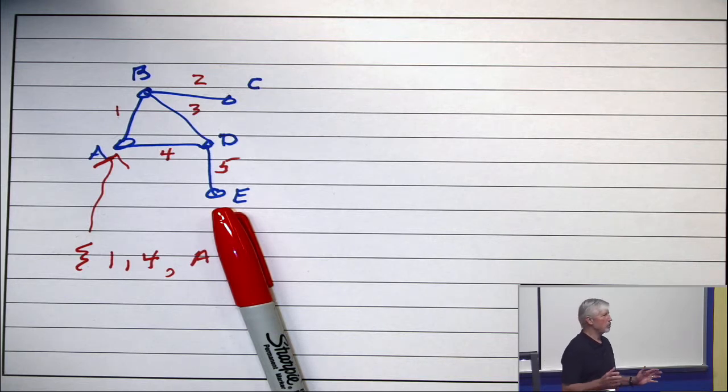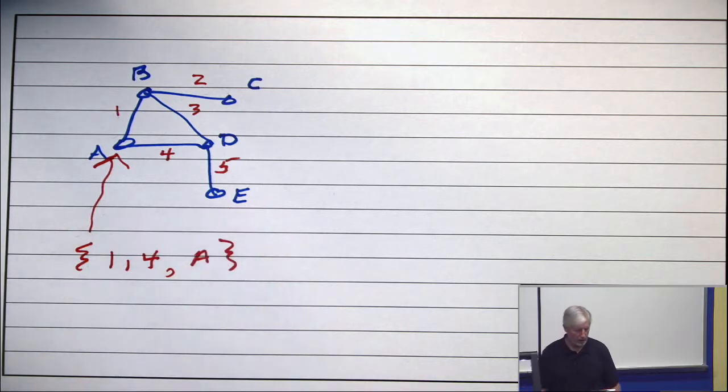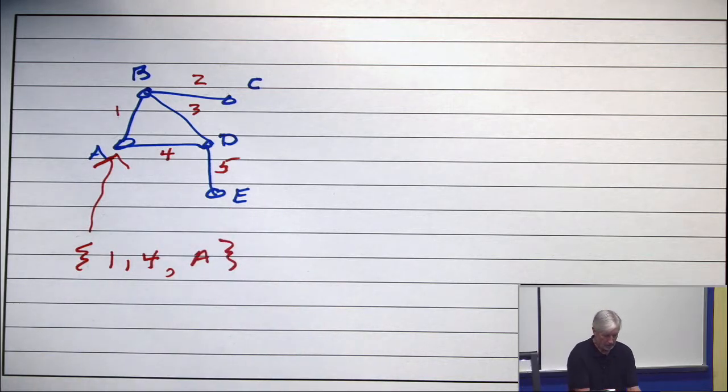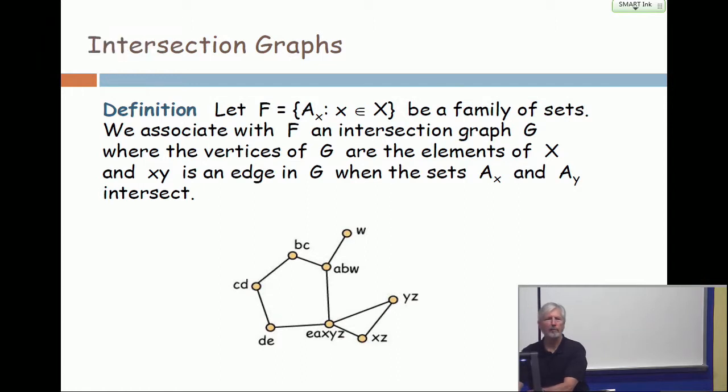Now, two sets overlap exactly when the corresponding vertices are adjacent. So, there's nothing special about intersection graphs. They're universal. So, what's interesting, then, is to say intersection graphs of what?